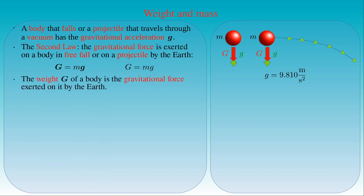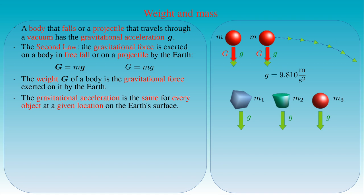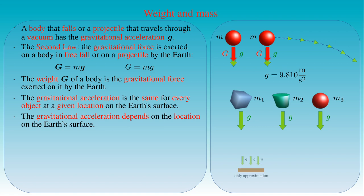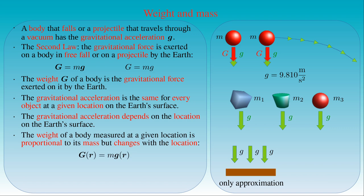If the mass of the free-falling body or projectile is m, then the magnitude of the gravitational force equals m times g, and is directed downward. This gravitational force acting on the body is called the weight of the body, denoted by the capital letter G. The weight G of a body is the force exerted on it by the gravity of earth, given by mass m times gravitational acceleration g. The gravitational acceleration is the same for every object at a given location on earth's surface, but it depends on location. The weight of a body measured at a given location is proportional to its mass but changes with location: for example, the weight of a 1 kg mass is 9.81 N at sea level at 45° latitude, 9.78 N at the equator, and 9.83 N at the poles.